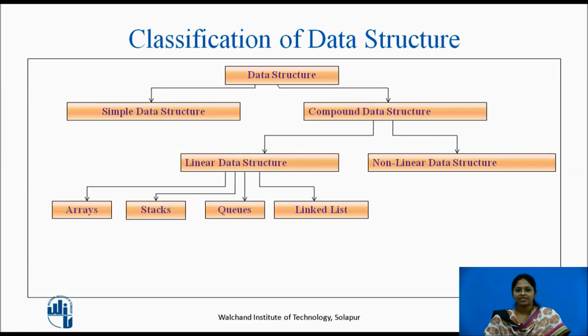A non-linear data structure can be constructed as a collection of randomly distributed set of data items joined together by using a special pointer. In non-linear data structure, the relationship of adjacency is not maintained between the data items. It can be classified as trees and graph.